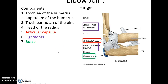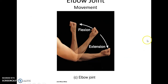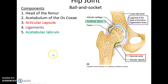The elbow joint is a hinge joint. Three bones come together here: the trochlea of the humerus articulates with the trochlear notch of the ulna, and the capitulum of the humerus articulates with the head of the radius. There is an articular capsule, ligaments, and a bursa. It allows for flexion and extension — uniaxial.